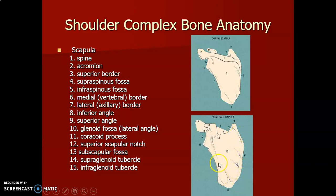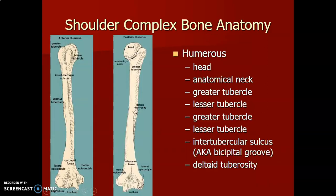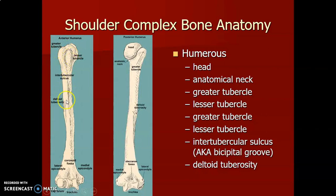Now the humerus. This is the head, anatomic neck, and the surgical neck. This is the bicipital groove or intertubercular sulcus between the greater tubercle and the lesser tubercle. The shaft has the deltoid tuberosity, and posteriorly it contains the radial groove.